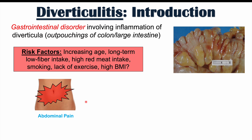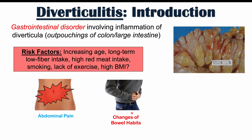Signs and symptoms of diverticulitis include abdominal pain, most commonly in the left lower quadrant. Looking straight at the patient, the left lower quadrant is in this area here — and that is where the sigmoid colon is, which is why we often see pain there. We can also see changes in bowel habits, either constipation or diarrhea or an alternation of both.